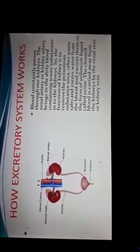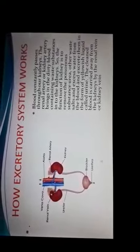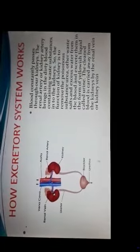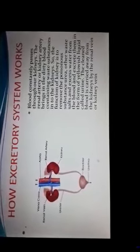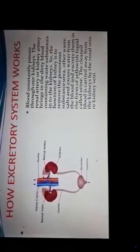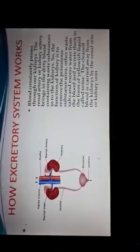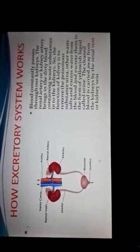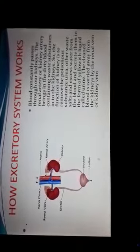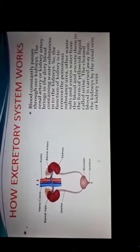So we can say that in the kidneys, urine is formed. Urine is a waste liquid that consists of excess water, waste salts, urea, and other poisonous substances. You know that urine is of a yellowish color.